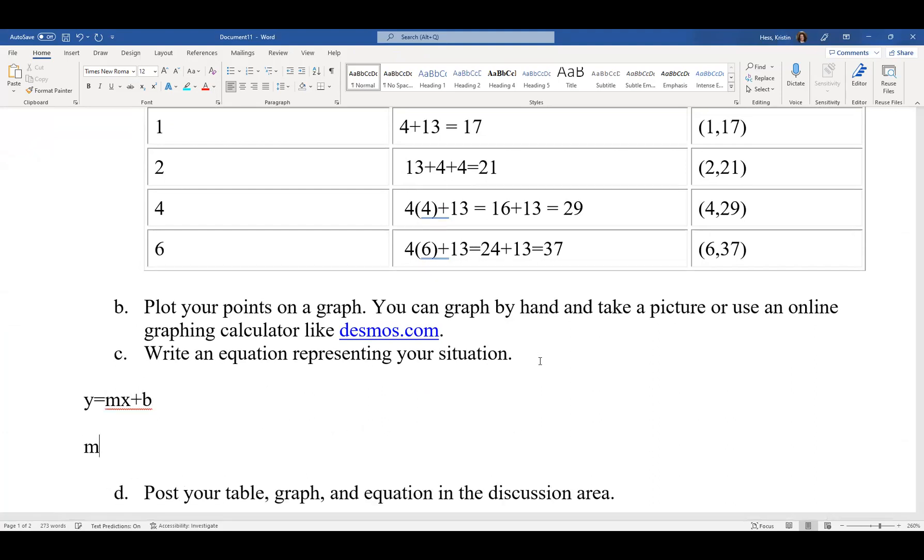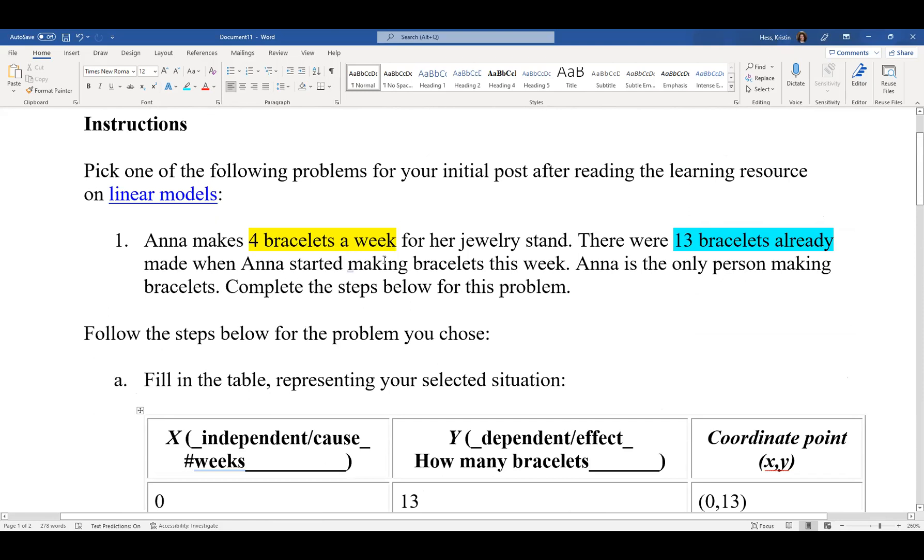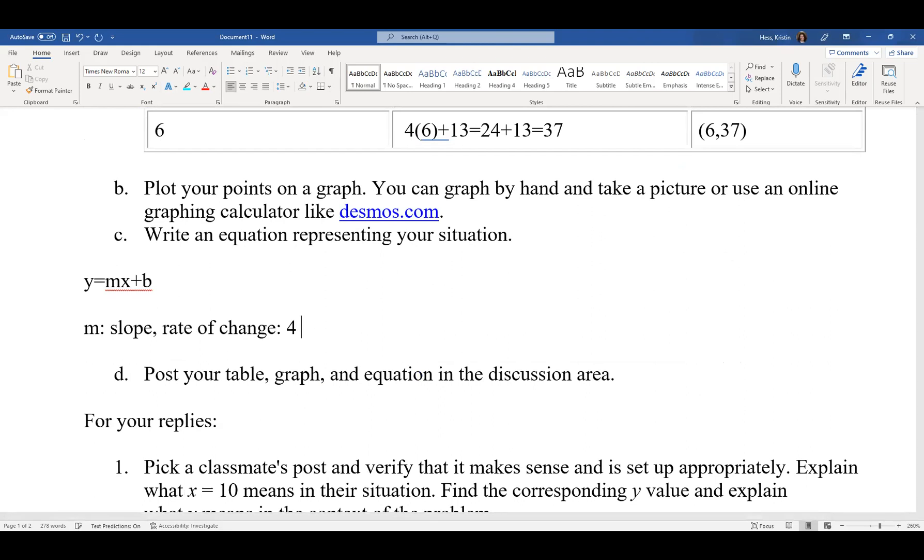As a reminder, m is our slope. Slope is also the rate of change. And so in this problem, we need to look for what is changing every week. The number of bracelets is what is changing. And so we know from the problem that we have four bracelets a week. So it's going to be four bracelets for each single week. So we can simplify that to just a slope of four.